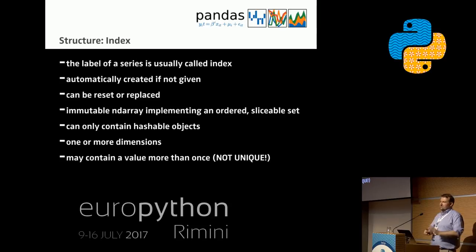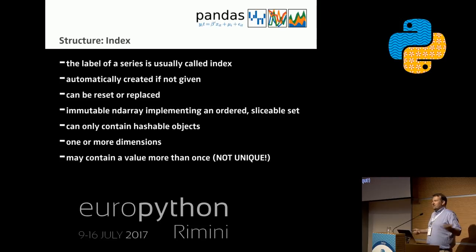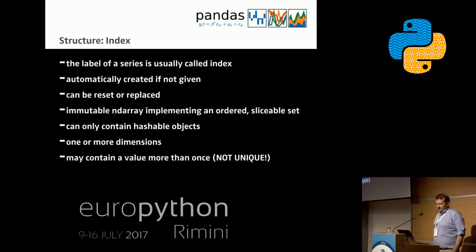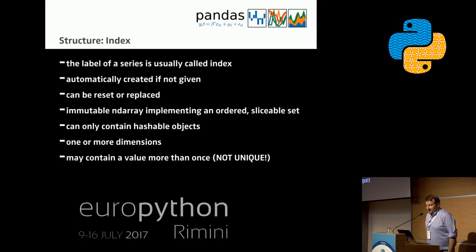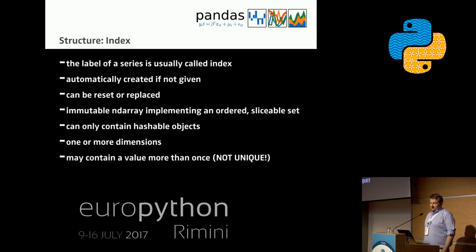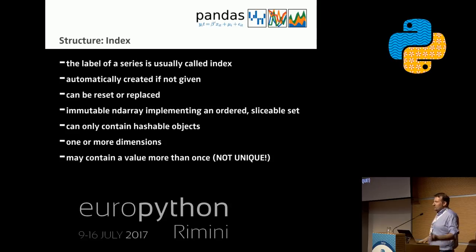The index may only contain hashable objects — you can't put a set or dict there. It can have one or more dimensions, and beware: it's not unique. I usually work with unique indexes, but you can also do some fancy stuff with non-unique indexes, which we're not going to cover today. We have multiple index types: the basic index, multi-index, datetime index — which is my favorite — time delta index, interval index, and most recently the categorical index, which can be very useful.